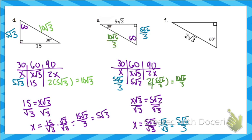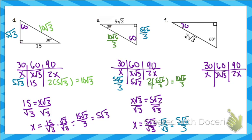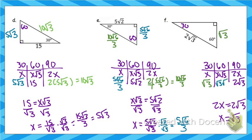Last one — pause the video and try it on your own if you feel comfortable. Chart: x, x√3, 2x. Across from 90 is 2√3, so 2x equals 2√3, meaning x equals √3. Across from 30 is √3. For the 60-degree side: √3 times √3 is √9, and √9 equals 3. So across from 60 is just 3.